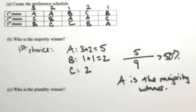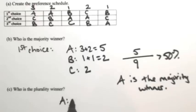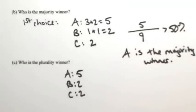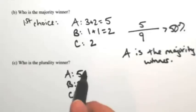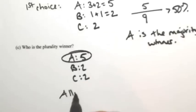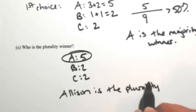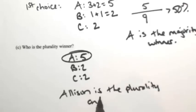The next question asks about the plurality winner. Looking at the results from before: A had five, B had two, C had two. The person with the most first choice votes is the plurality winner. So it turns out that Allison is both the plurality and majority winner.